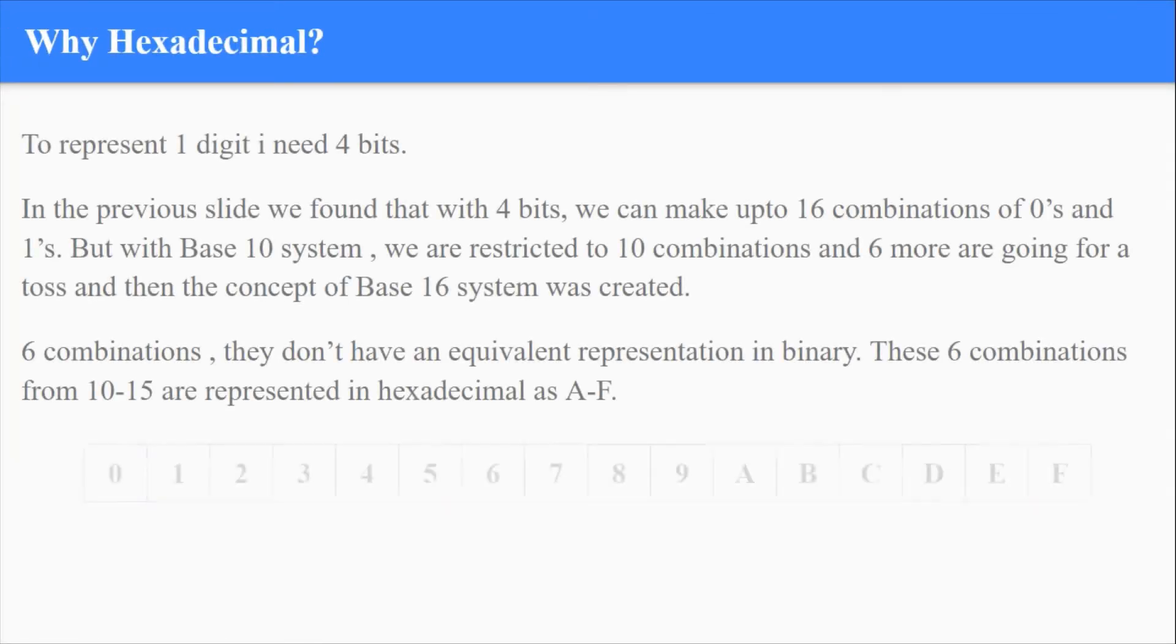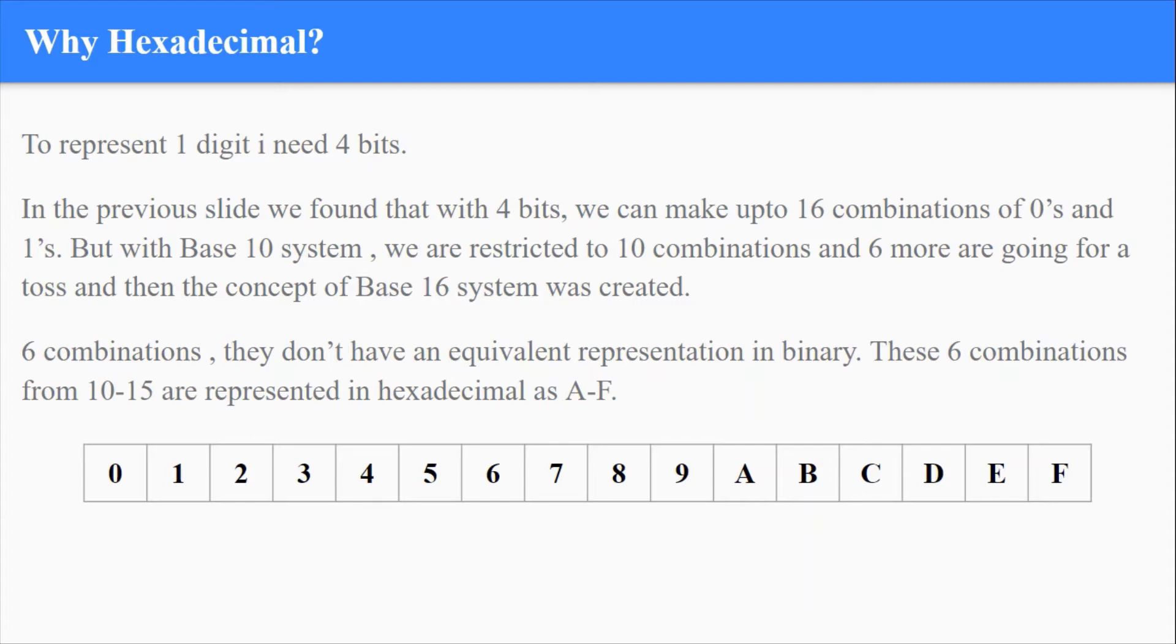So to represent 1 digit in decimal I need 4 bits. Hope we are clear with that now. But in 4 bits you can get only 16 combinations. What I have now is only 10 combinations. 6 more combinations are going for a toss. 6 more combinations do not have equivalent representation in decimal system. So for the rest of the combinations, they need to be assigned a symbol. There came the need for representing 16 symbols in 1 digit, and the birth of hexadecimal system.